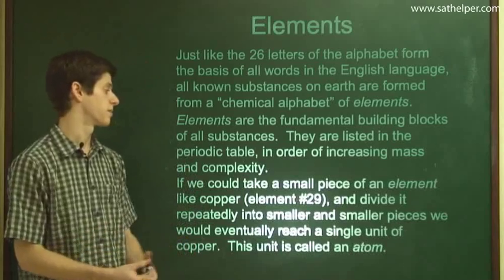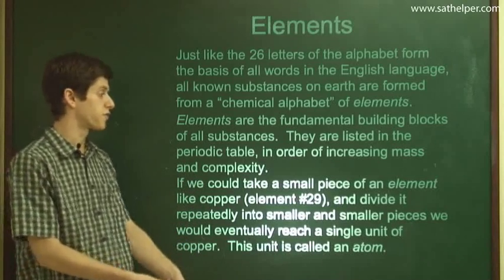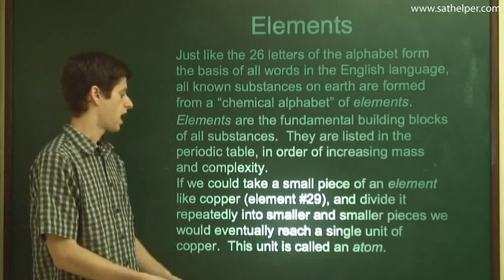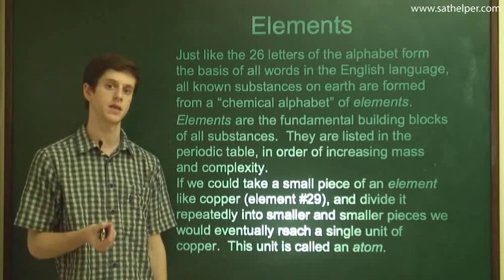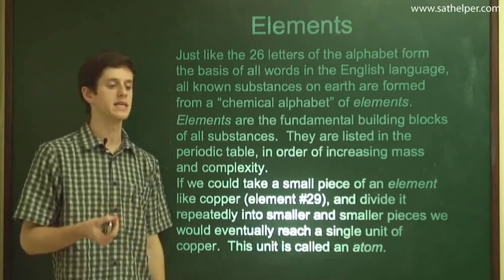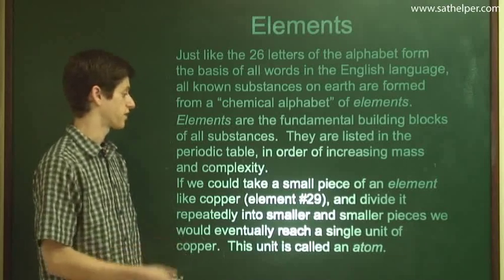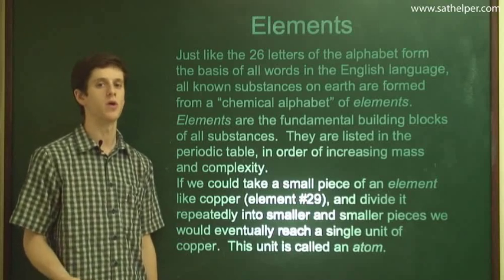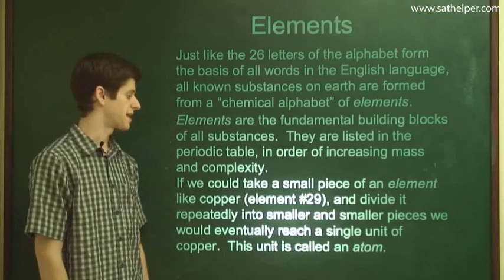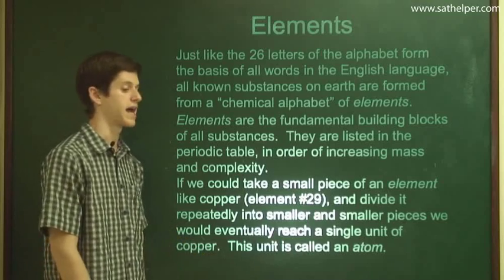If we could take a small piece of an element and divide it further and further, for instance like copper, we would eventually divide it so much that we would arrive at the smallest piece of that element that still is that element. If we were to divide this small piece any further, it would no longer be copper. This tiny, tiny piece is called an atom. That's the basic unit of an element.